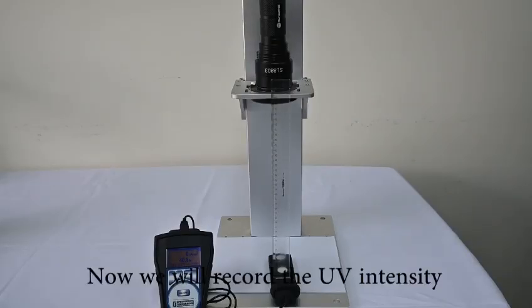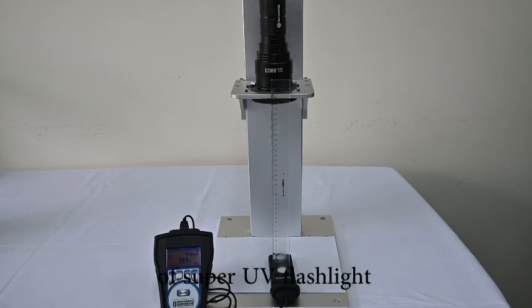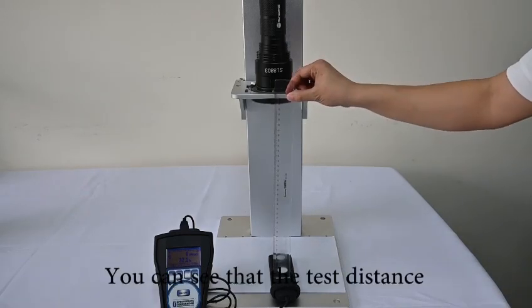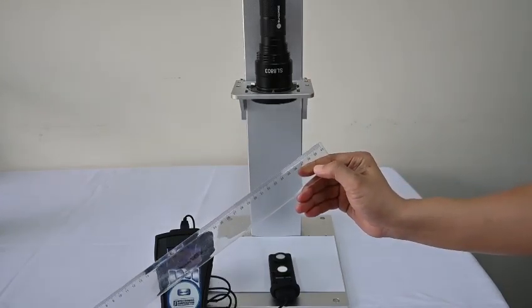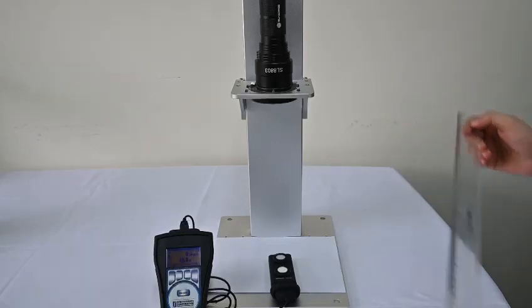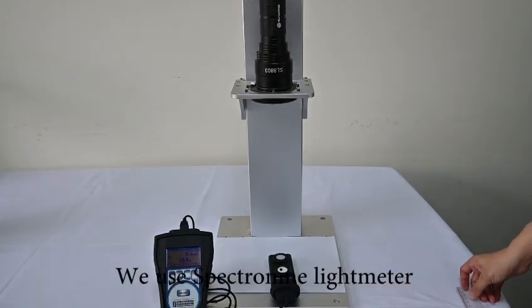Now we will record the UV intensity of the Super UV flashlight. You can see that the test distance is 38 centimeters away. And to ensure the accuracy, we use a spectrometer.